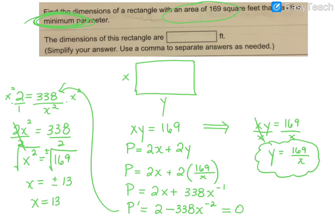And so if my X is equal to positive 13, and I know that X times Y has to give me 169, then if I plug that back in, if I come over here, my Y is 169 divided by my X, and 169 divided by 13 would tell me that my Y is 13.